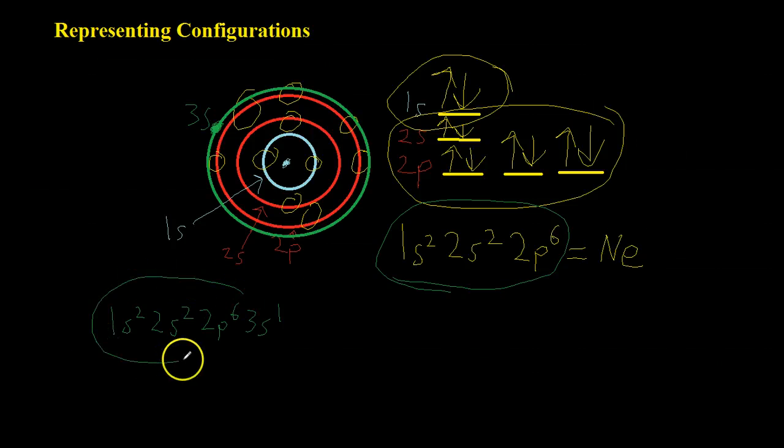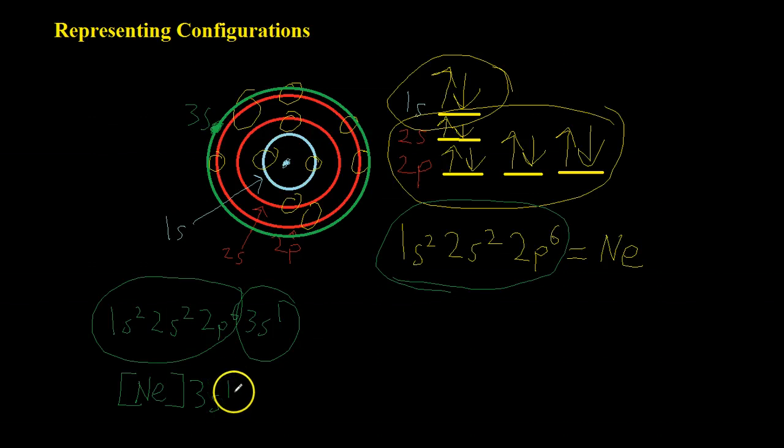So, what you'll notice is that this part is the exact same as neon. So, what you can do is take the noble gas element that precedes any element in the periodic table. Obviously, you can't do this for hydrogen, because it doesn't have a noble gas that precedes it. Only helium is the first one, and that comes after hydrogen. But what you can do is for every other element, you can put that in brackets as a substitute for all this writing over here, and then just add on the additional part. So, the noble gas notation for sodium would be neon in parentheses with the 3s1 on the end.